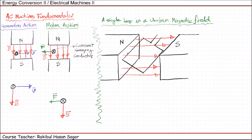Suppose this single loop is rotating in the anticlockwise direction. What will happen in this case? Now if we see the same figure from different views, things will be easier to understand. Suppose if we look from the top, this is the top view. And if we look from the side, considering this surface, that view can be called the side view.